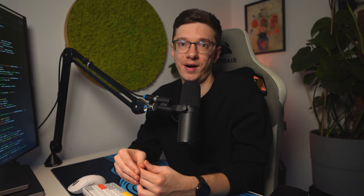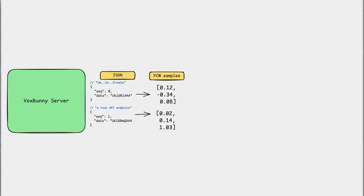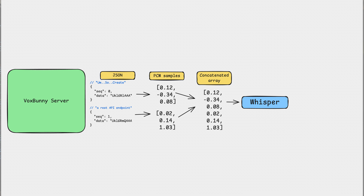The server, which I wrote using FastAPI, receives these audio chunks as JSON messages through a WebSocket endpoint. After receiving the last chunk, everything is concatenated into a single message and passed to a speech recognition AI model called Whisper. Whisper processes the audio buffer and transforms it into text, and at this stage we already get a pretty accurate interpretation of what was said.